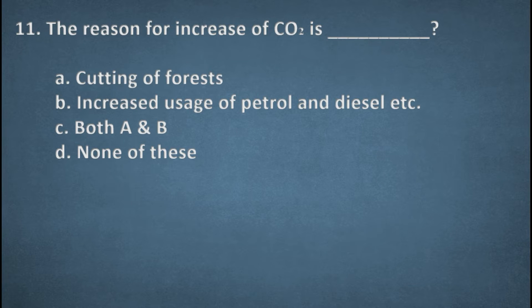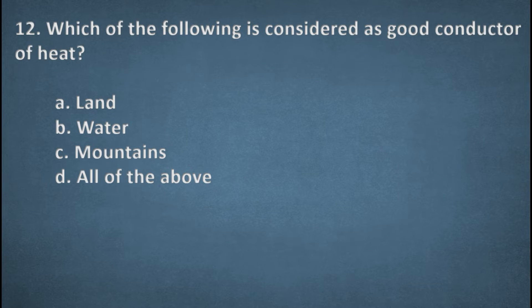Next one. The reasons for increase of CO2 is. Options: Cutting of forest, Increased usage of petrol and diesel, Both A and B, None of these. The right option, Both A and B. Cutting of forest and increased usage of petroleum products. Next one. Which of the following is considered as good conductor of heat? Options: Land, Water, Mountains, All of the above. The right option, Land.